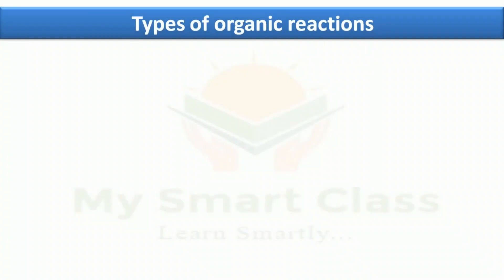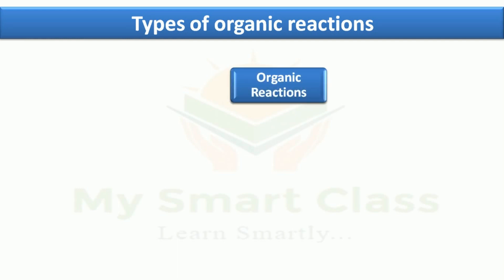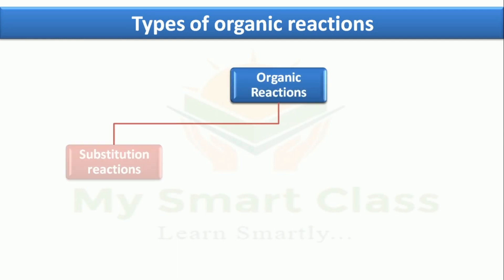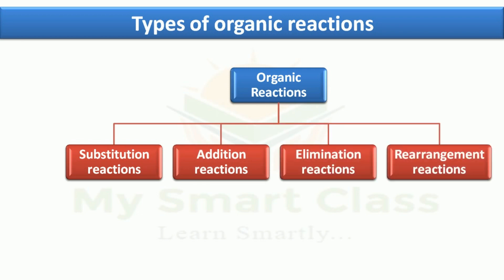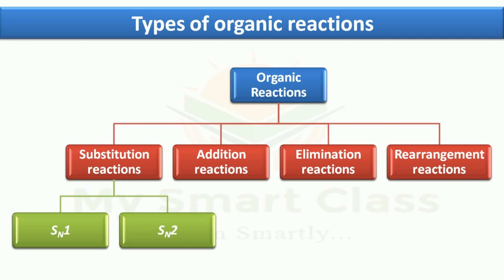Before understanding SN1 and SN2 reactions, let's understand the types of organic reactions. Organic reactions are divided into four parts: substitution reaction, addition reaction, elimination reaction, and rearrangement reaction. Substitution reactions are further divided into two parts: SN1 and SN2 reactions — which is our main topic.